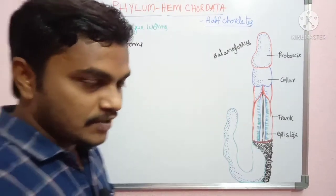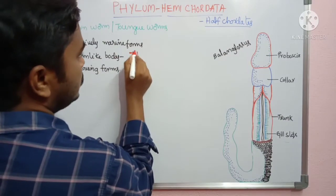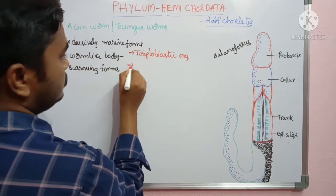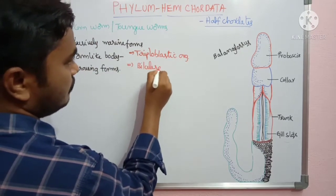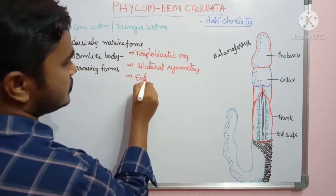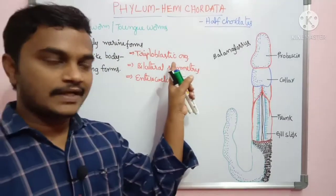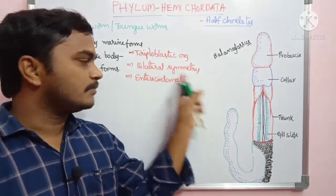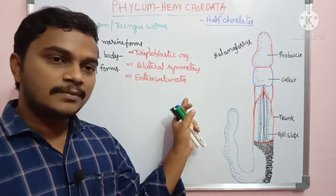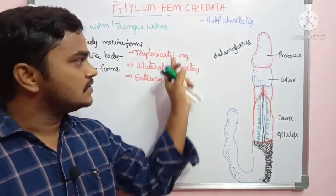Like normal animal kingdom characteristics, these are triploblastic organisms — the body contains three layers: ectoderm, mesoderm, and endoderm. They show bilateral symmetry, meaning the body can be divided into two equal parts in a single plane. These are enterocoelomates. Chordata, Echinodermata, and Hemichordata all come under enterocoelomates.